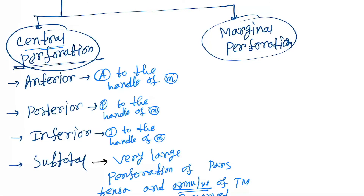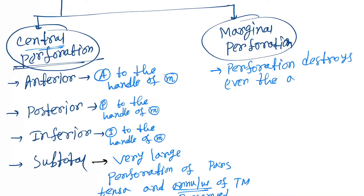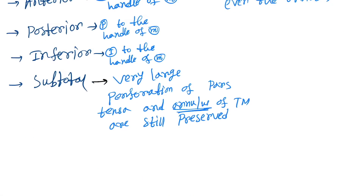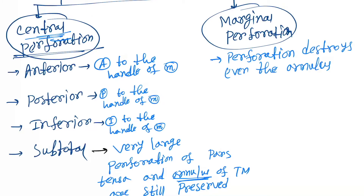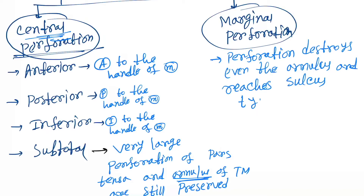Now come to marginal perforation. Marginal perforations are perforations that destroy even the annulus. In central perforation the annulus is preserved, but here the annulus will be destroyed, and the perforation reaches the sulcus tympanicus.